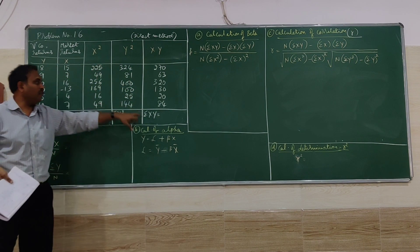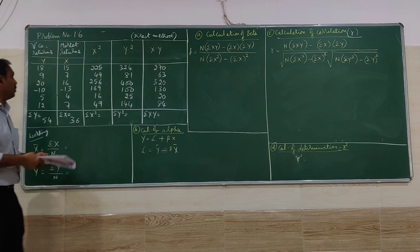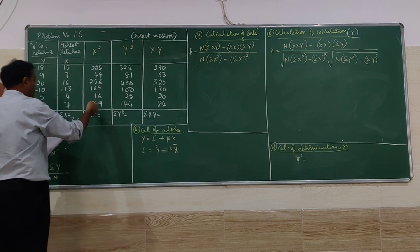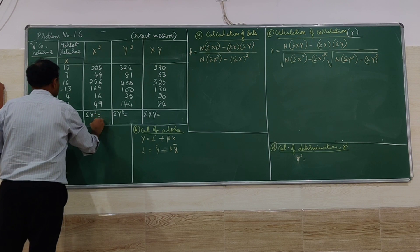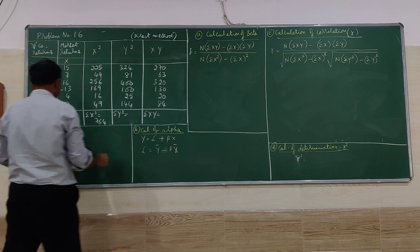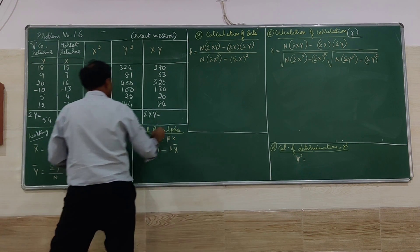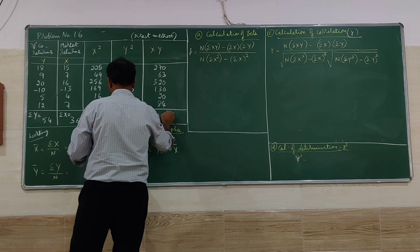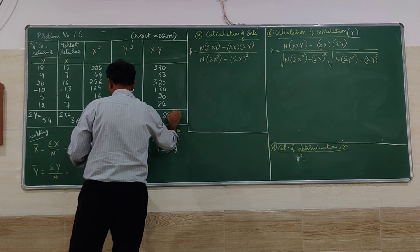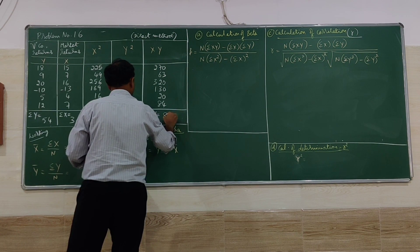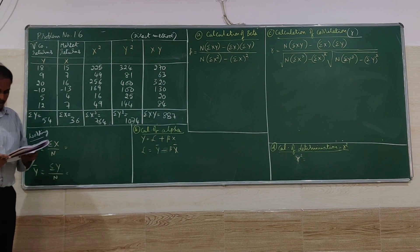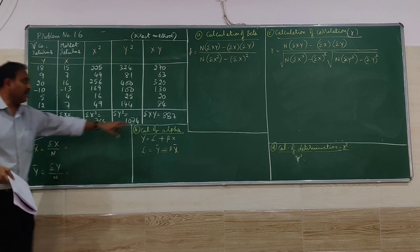We now find the totals: Σx² = 764, Σy² = 1074, and Σxy = 887.